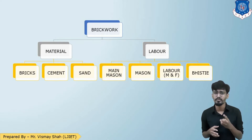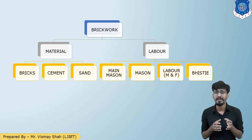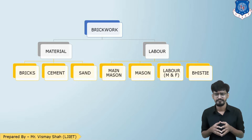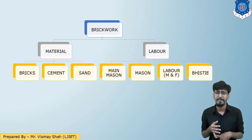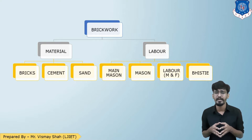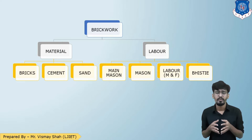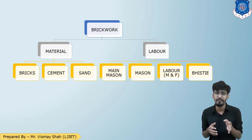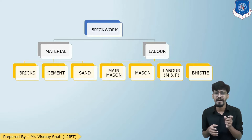I have divided the entire rate analysis into two components: material and labor. We are going to have the rate analysis for a 10 centimeter thick partition wall in cement mortar ratio 1:4 for a quantity of 10 meter square. In brickwork, the material component consists of brick, cement, and sand. The labor component includes main mason, mason labors (male and female), and Bhisti — the male labor allocated to specific minor works such as curing.